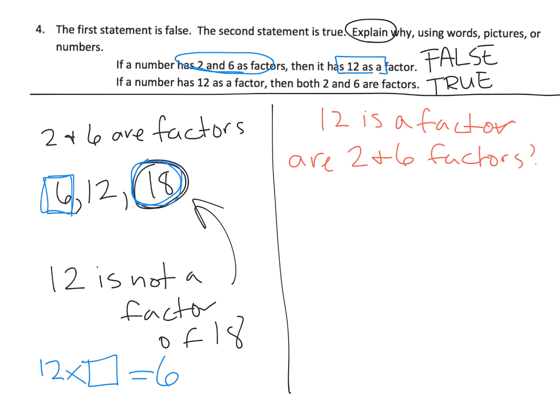Well, let's see, what are some numbers that have 12 as a factor? Well, 12, because 12 divided by 12 is 1. And then 24 is going to have 12 as a factor. And let's see, 36, 48, and so on.